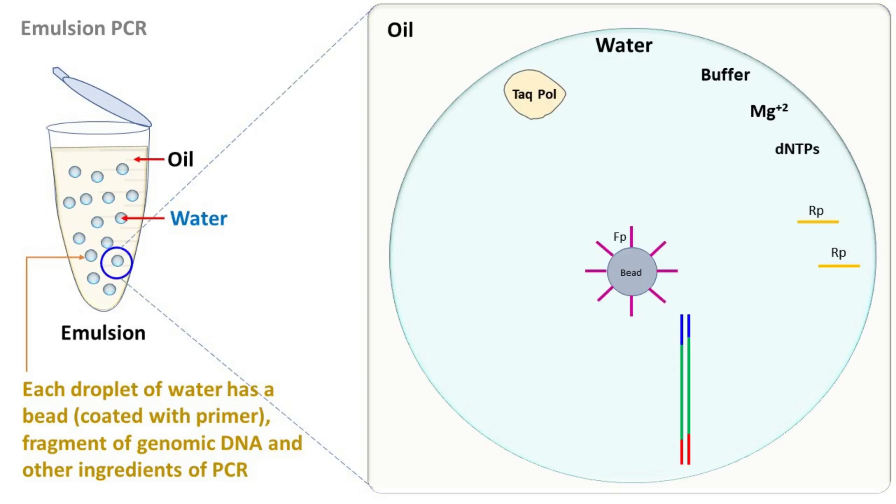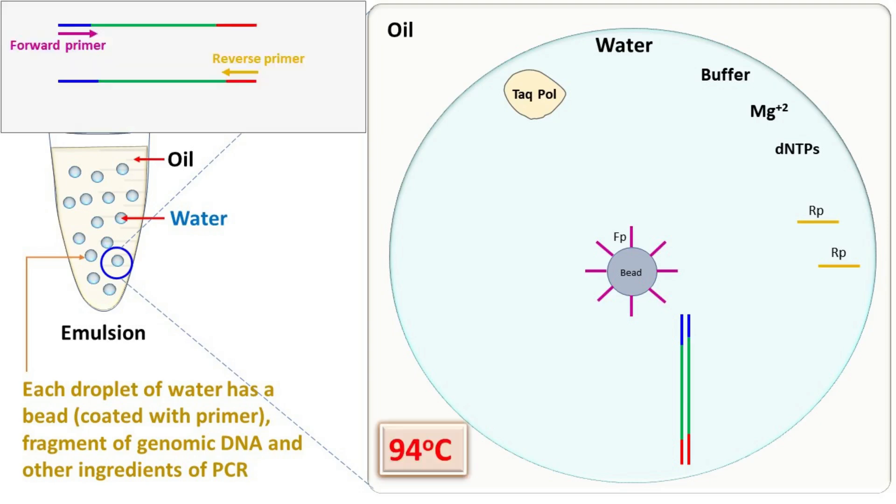The PCR tube containing this emulsion is kept in a PCR machine. During the denaturation step, the strands get separated.